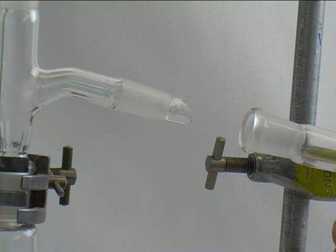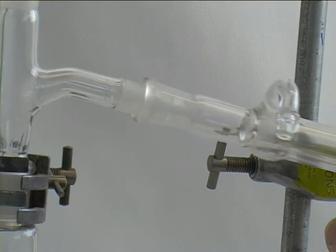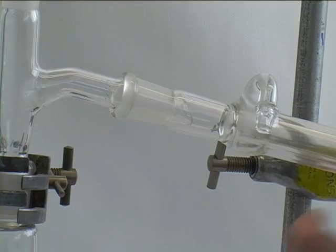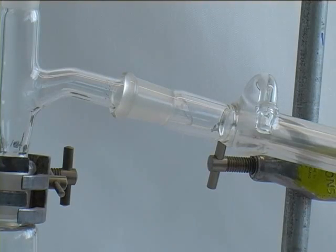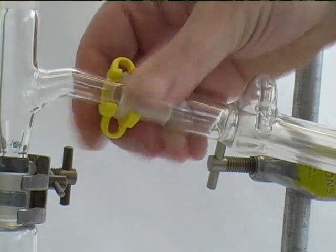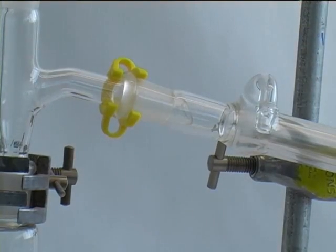Once you have aligned the whole apparatus, you just open the clamp on the condenser and slide the condenser over the joint of the still head. Then you fix the clamp again and affix the still head to the condenser using a yellow joint clip.